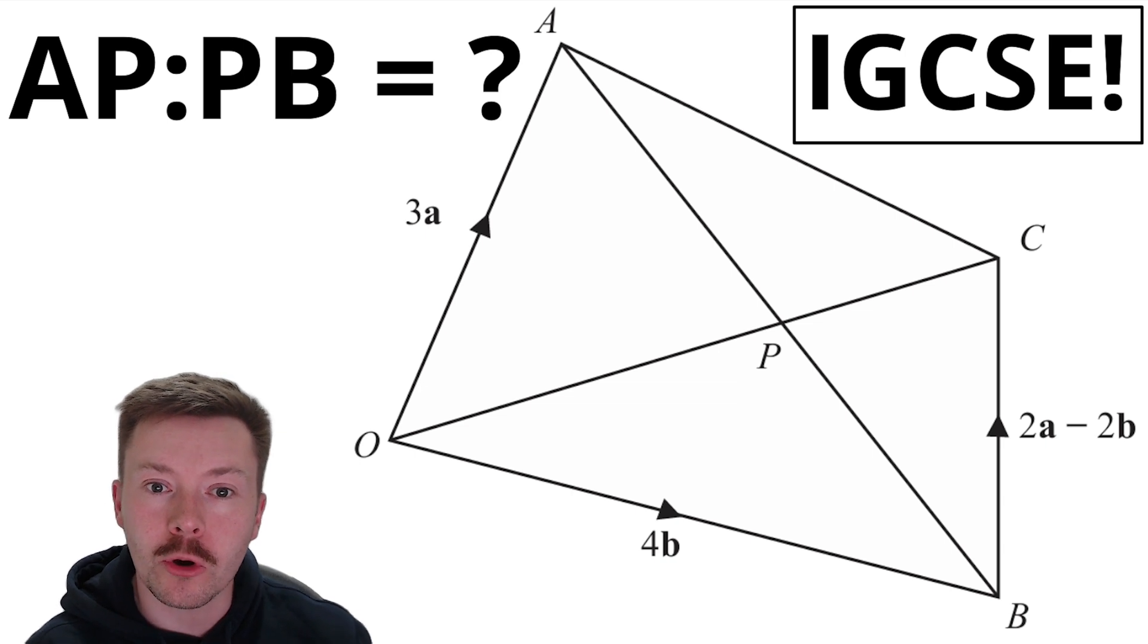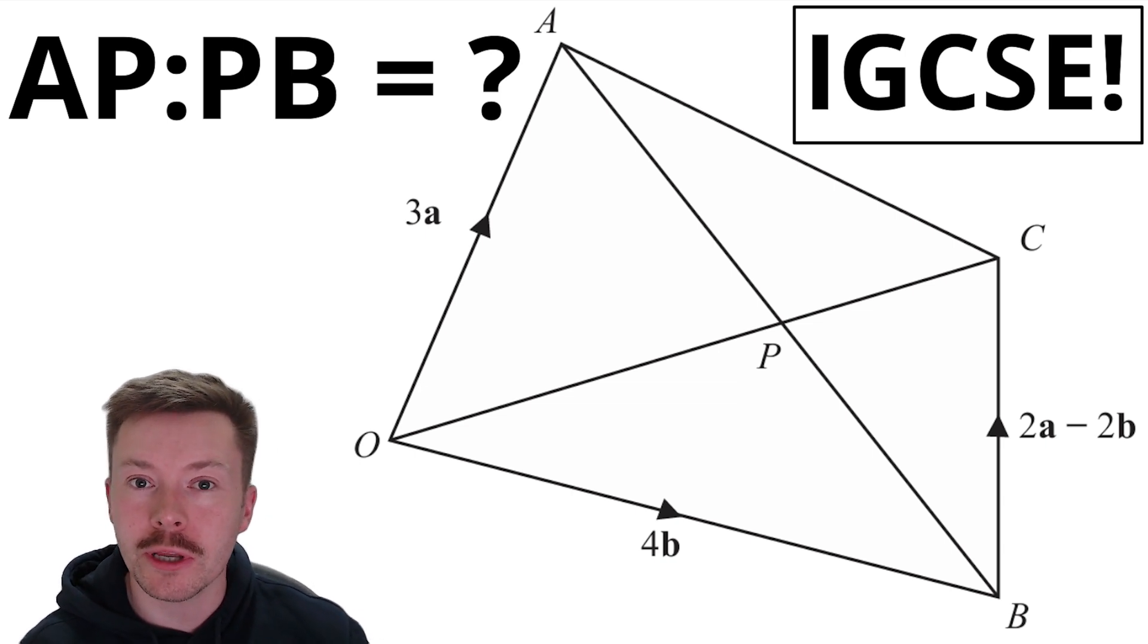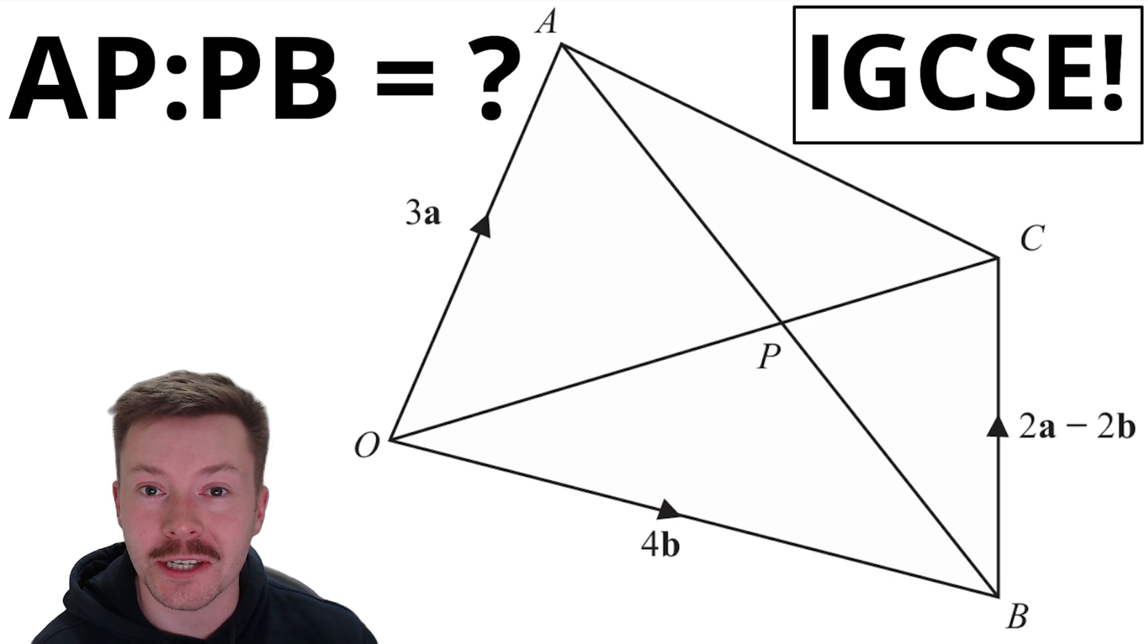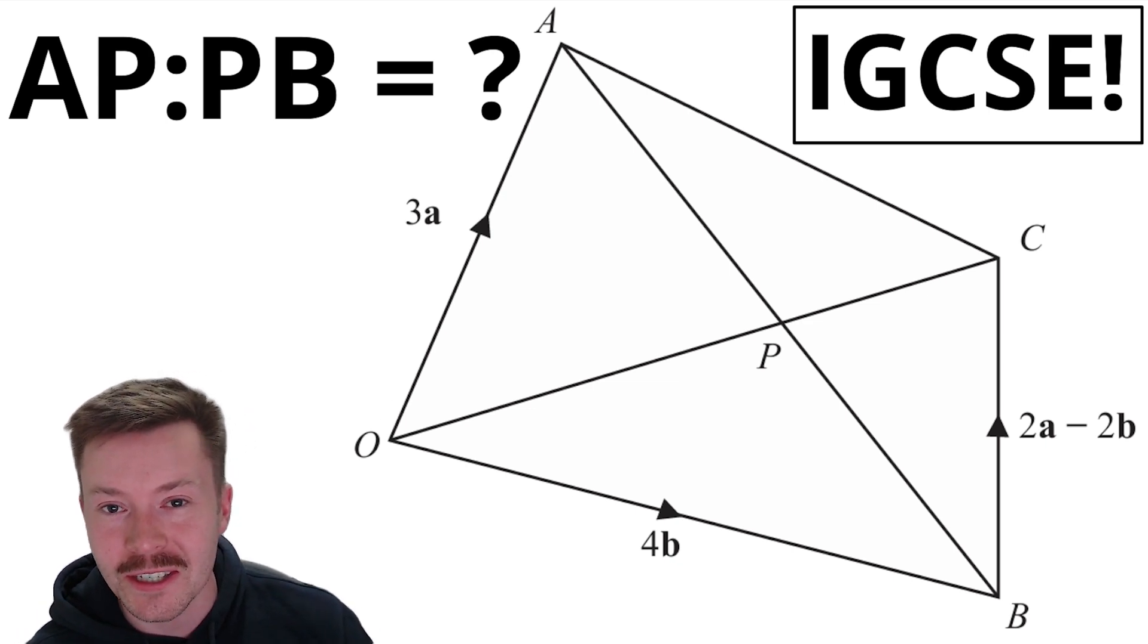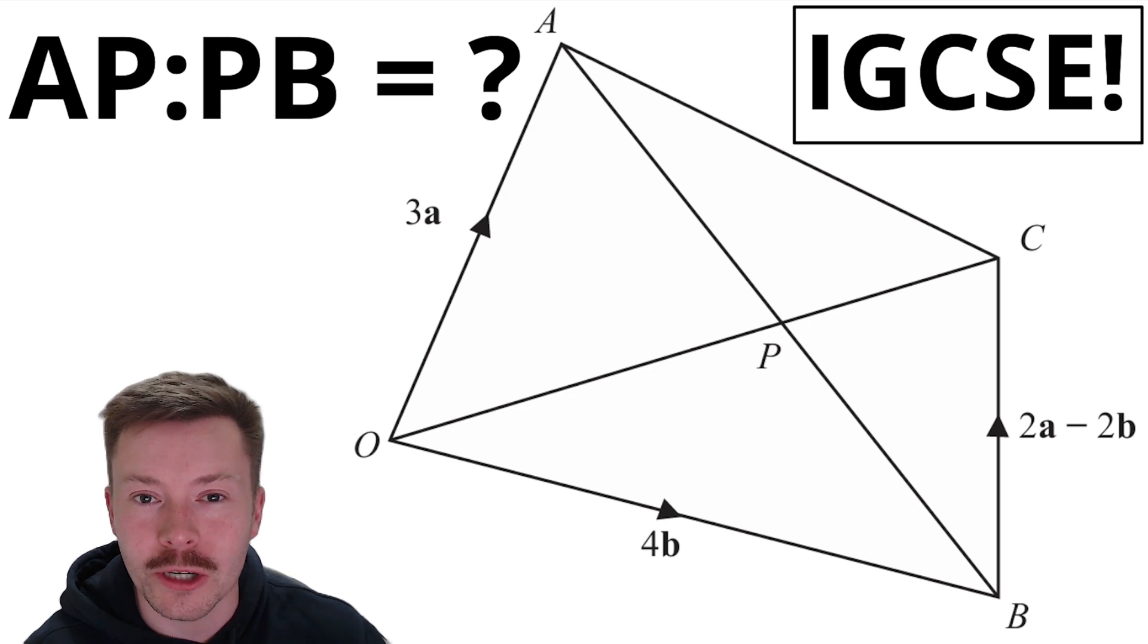So you can see here we've got this vector set up and we want to split the line in the ratio from A to P to P to B. Can you solve this problem? If you are doing your IGCSE, do you know how to do this? And if you are someone who has done their GCSEs or IGCSEs, can you remember how to solve this problem?